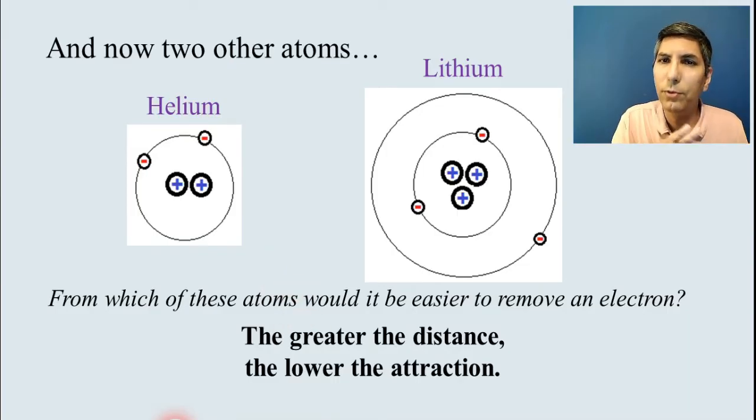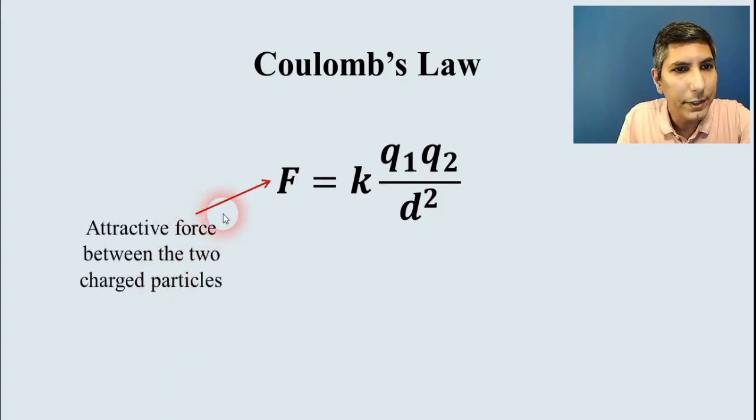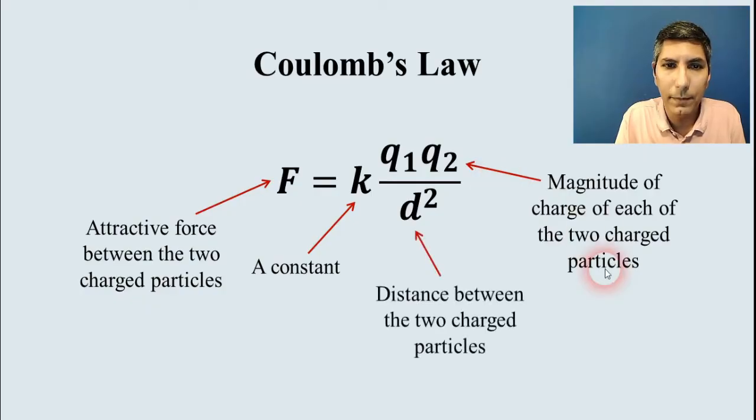So, I want you to think about those two factors we've just talked about. There's the magnitude of the charge and the distance between the charged particles. Now, this brings us to a very important concept in chemistry that helps us understand atomic structure. This is called Coulomb's Law. And this is a law that we use from physics. And the F stands for the attractive forces between any two charged particles. Now, this K stands for a constant.